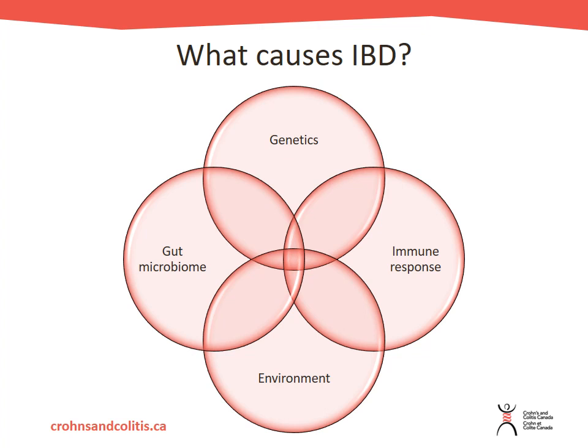These genetically predisposed individuals are then exposed to something in the environment — we're not sure exactly what. It could be viruses, bacteria, exposure to inhaled toxins, or a whole variety of things. That environmental trigger then alters the gut microbiome, which is a community of microorganisms that live in the digestive system and maintain our digestive health. These are good bacteria that we want in our digestive system. For individuals with IBD, that gut microbiome is disrupted in some way.